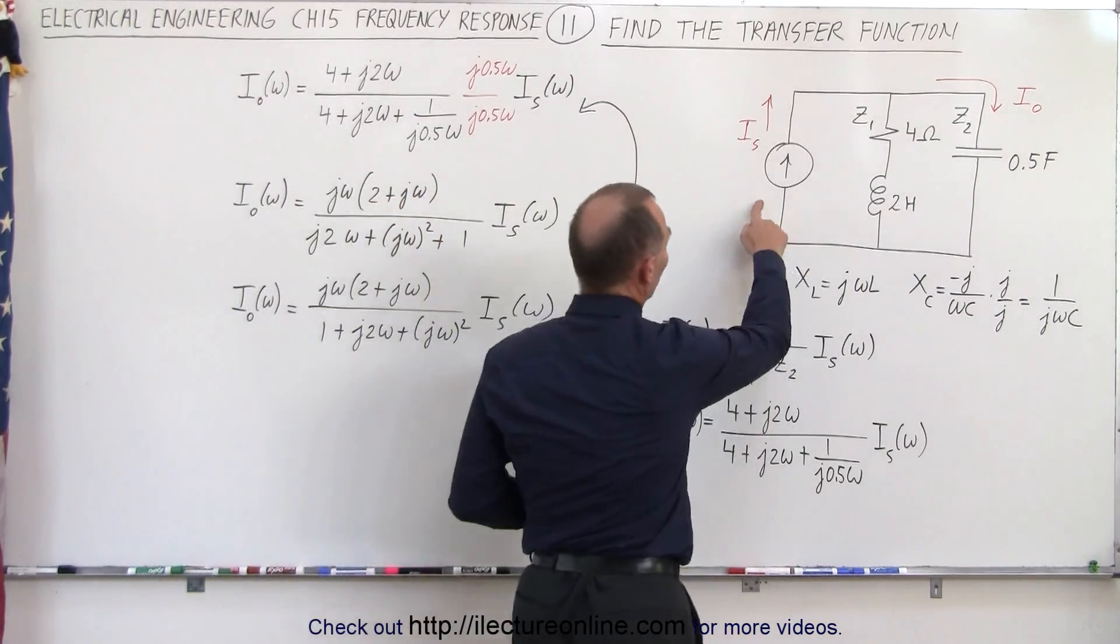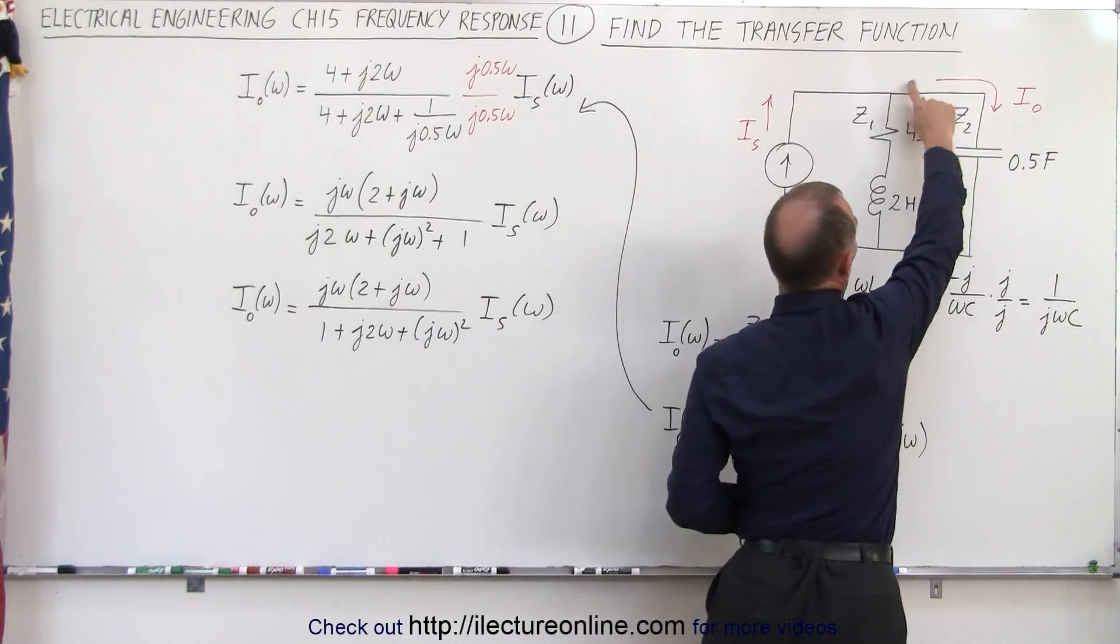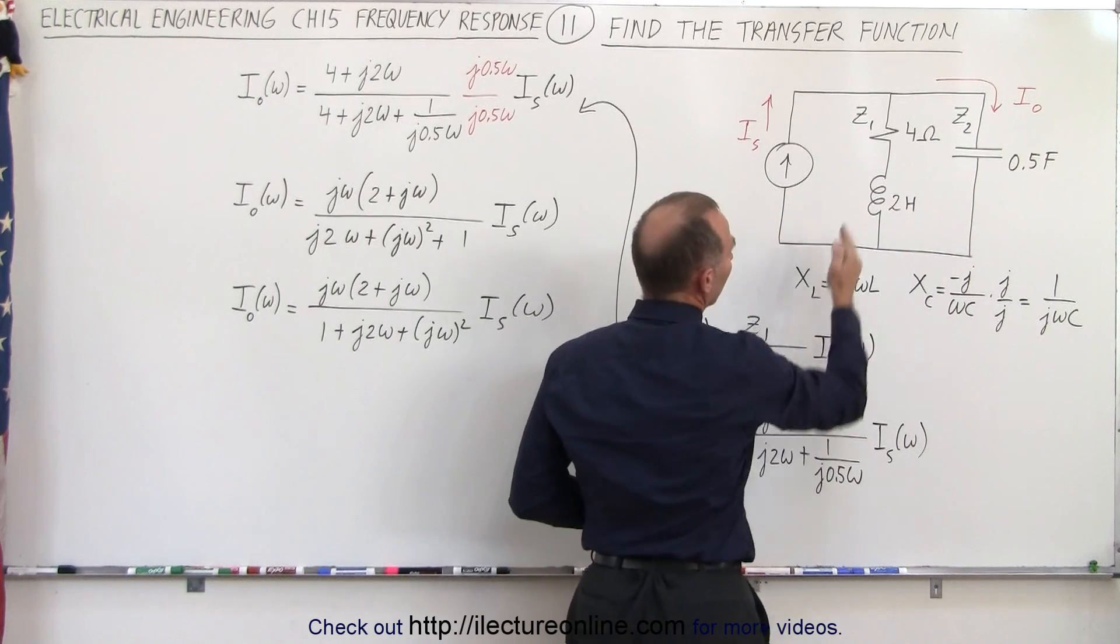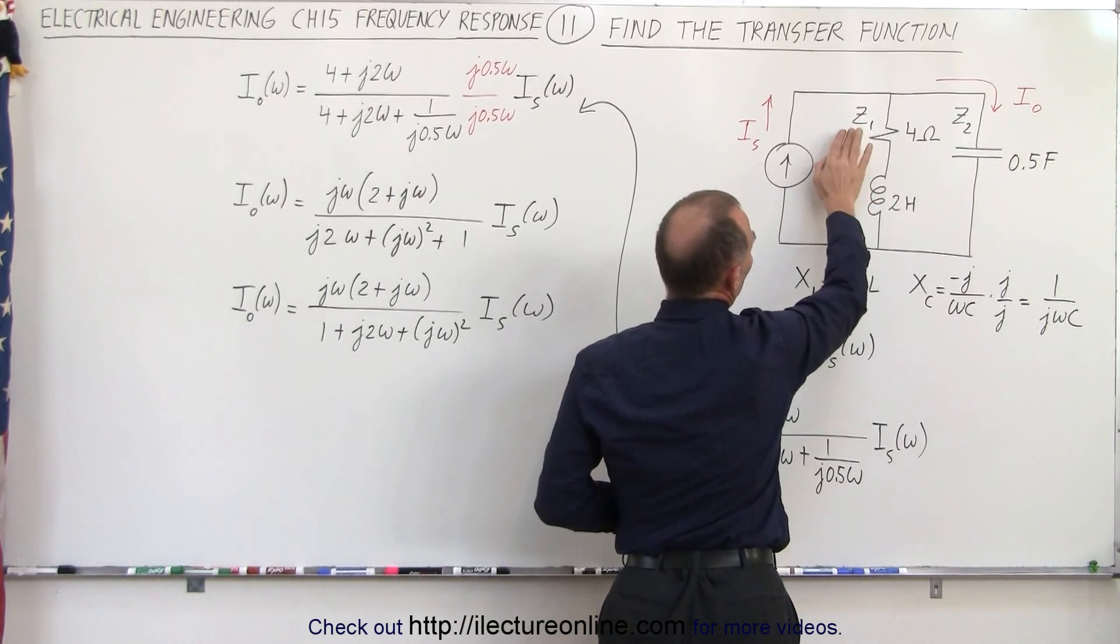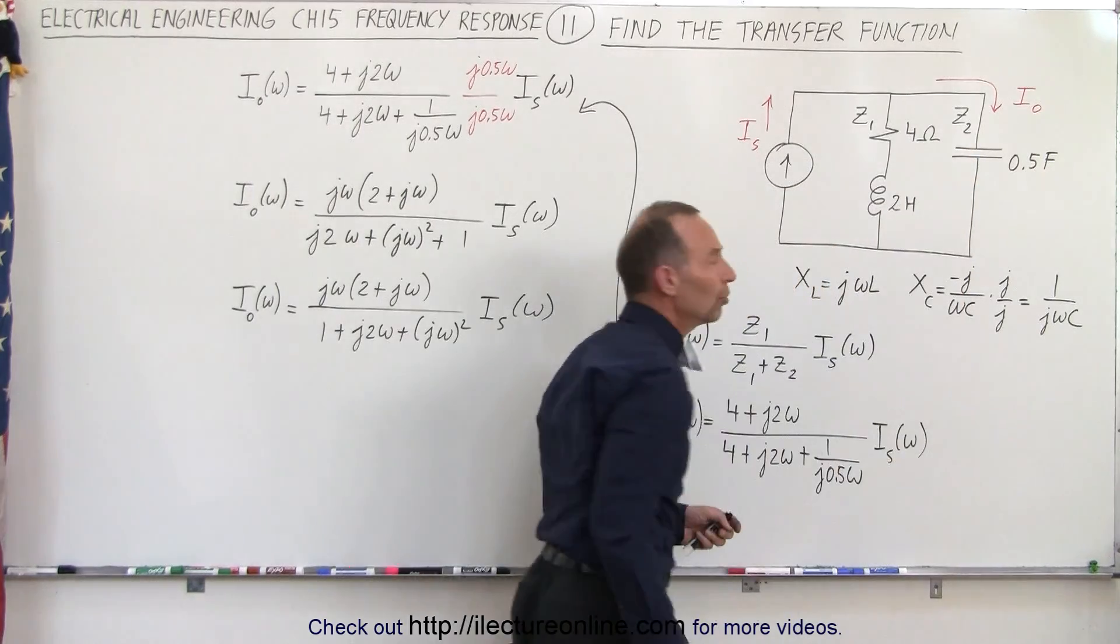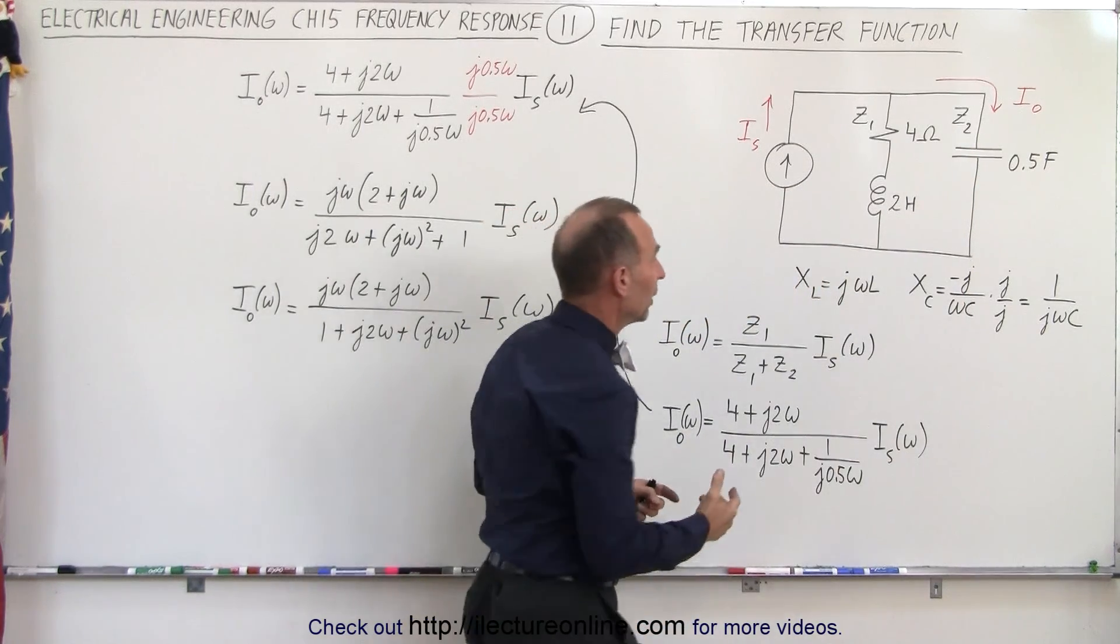Let's say we have a current source and want to know what the current output is in the second branch. Notice we have two branches here. Let's call this branch the branch with impedance Z1 and this branch with impedance Z2.